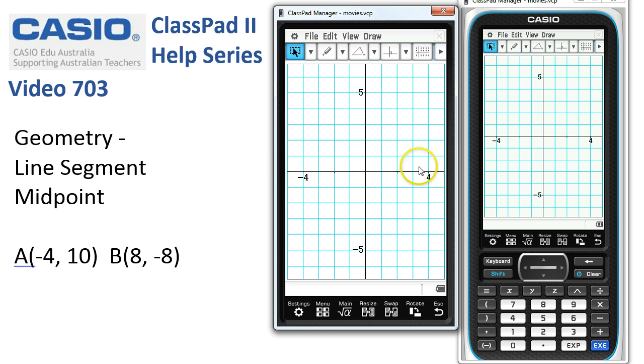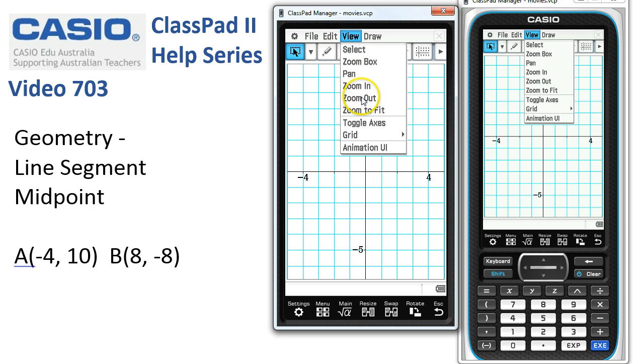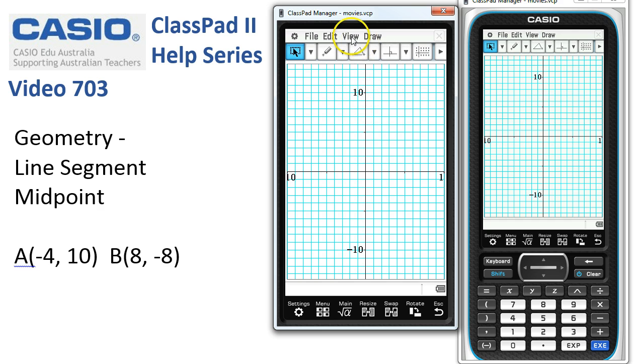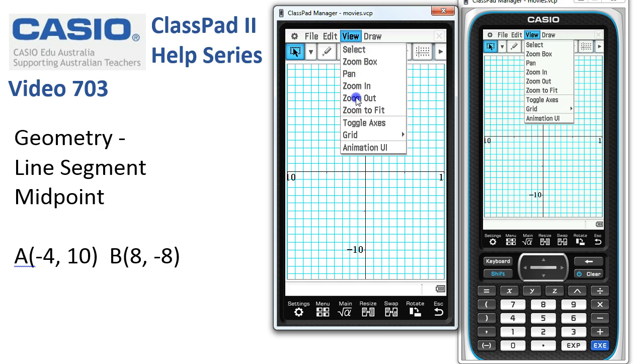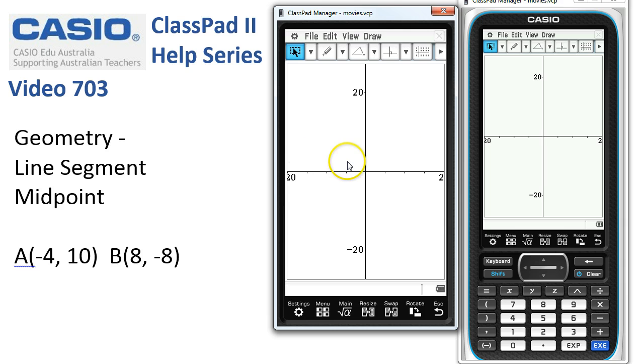Now at the moment the scale is too small for us to fit these points on, so I'm going to zoom out. A couple of ways of doing that. The first is to tap view, zoom out. And if I did that again, view, zoom out, we actually lose the grid there.